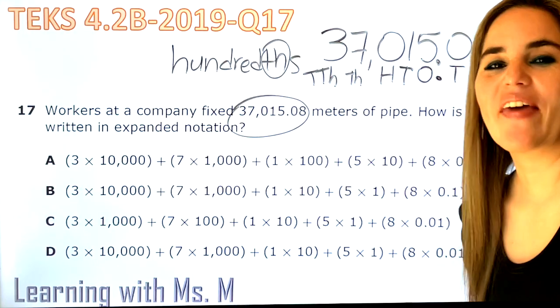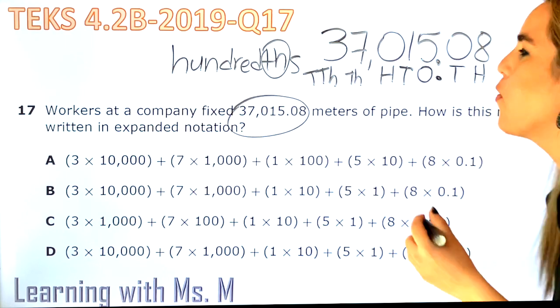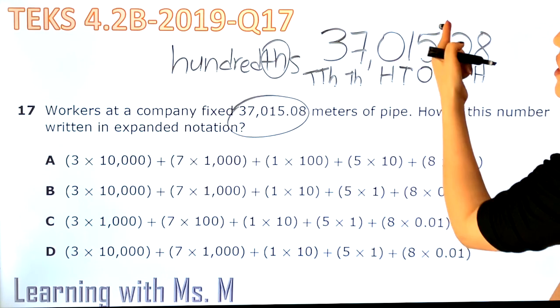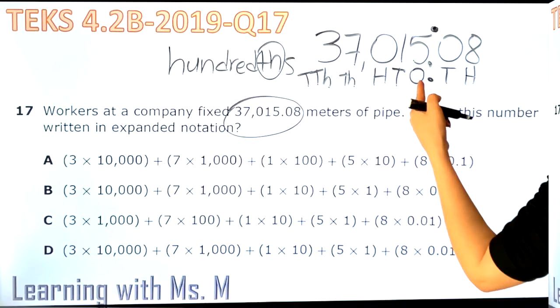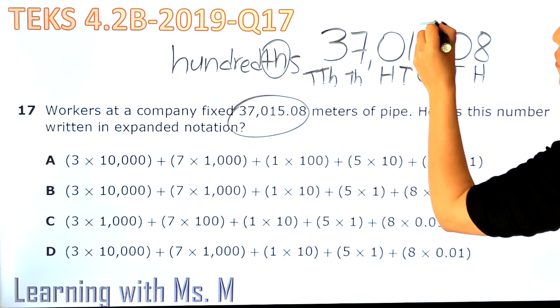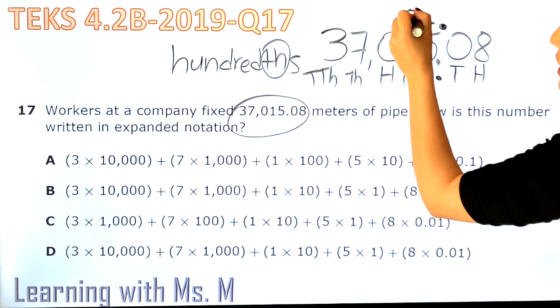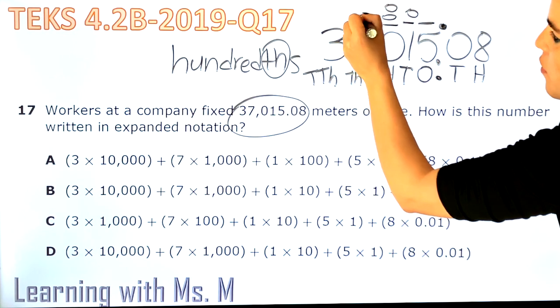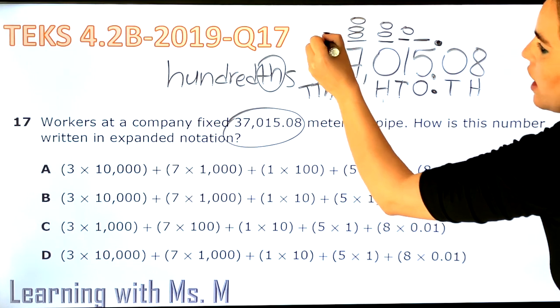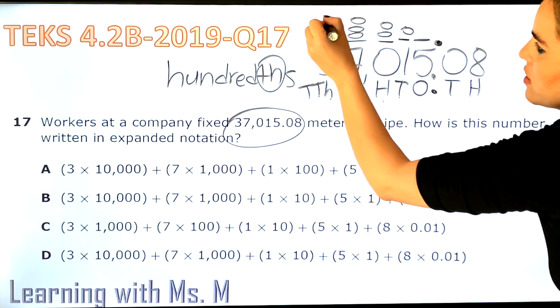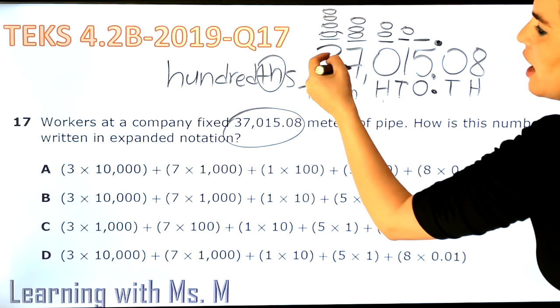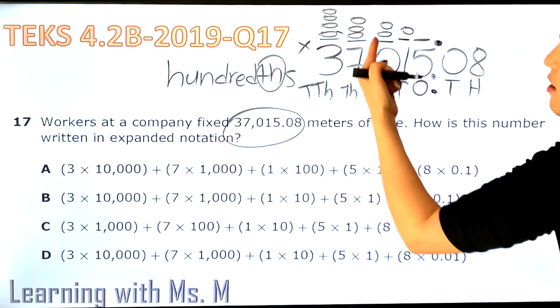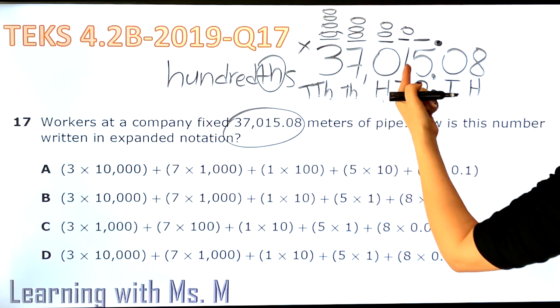Now let's write the place value per digit. I like to start with a whole number, so write your decimal point right on top of the decimal point. Here you have your ones, and the ones are groups of one. Tens are groups of 10, hundreds are groups of hundreds, thousands are groups of thousands, and ten thousands are groups of 10,000. So here we have 3 groups of 10,000, 7 groups of 1,000, 0 groups of 100, 1 group of 10, and 5 groups of 1.